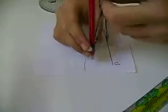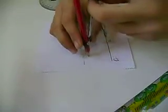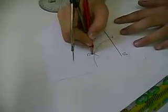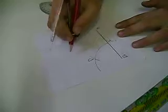Then from point C we will put the point of our rounder with the same radius and intersect that arc. We can name this point D. This is basically a 60 degrees angle.